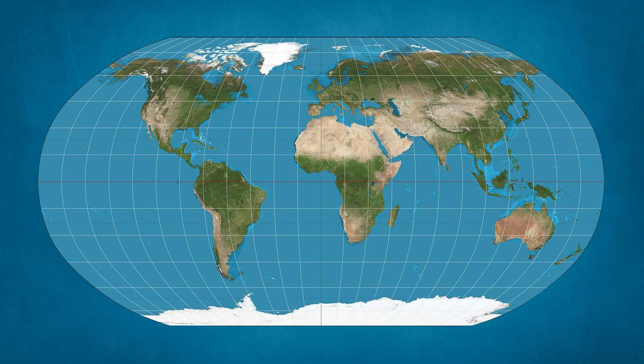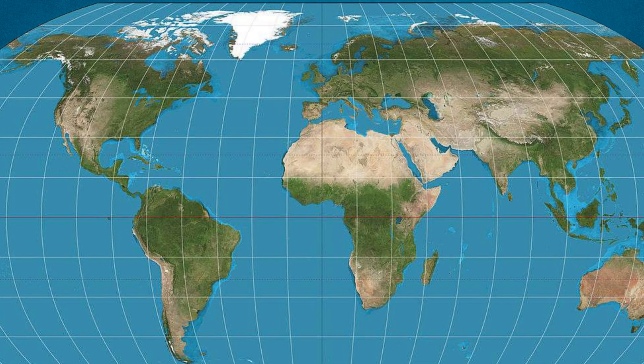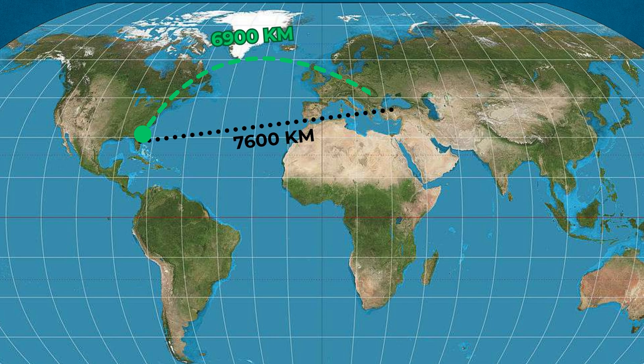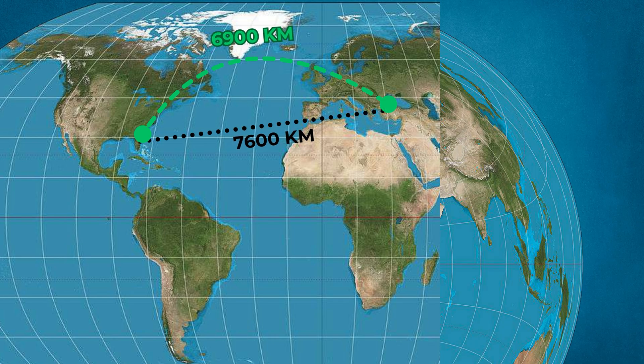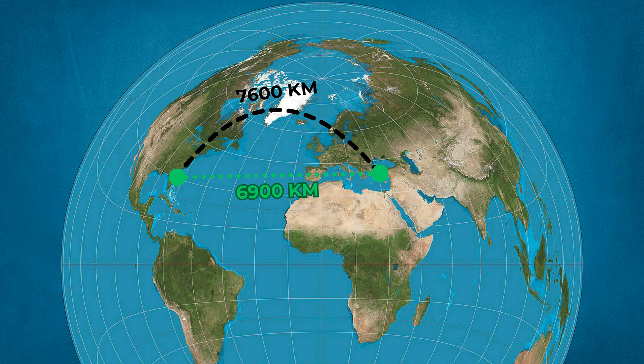The answer isn't that planes are dodging invisible walls in the sky or flying around the world just for fun. The real reason has everything to do with the shape of our planet, how we represent it on maps, and how physics, geography, and navigation all play a role in designing efficient, safe, and cost-effective flight paths.